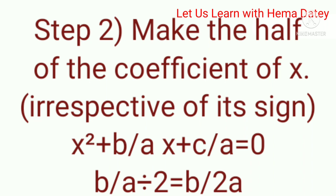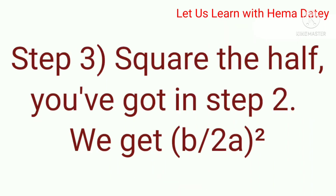Here the coefficient of x is b/a. In Step 2, we have to make half of b/a, which is b/2a. In Step 3, square the half you got in Step 2. We get (b/2a)².